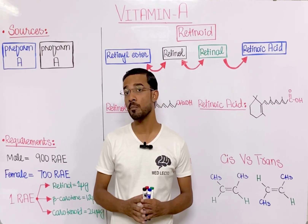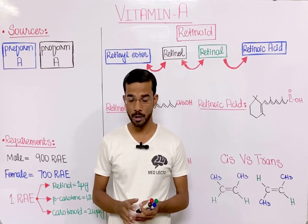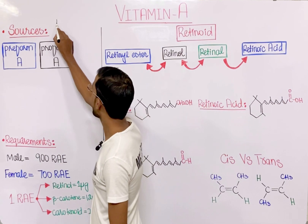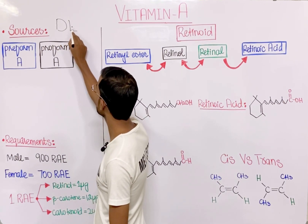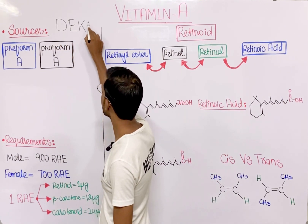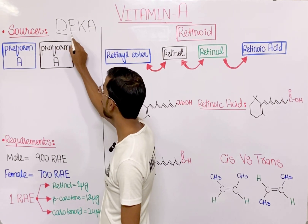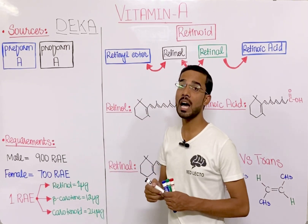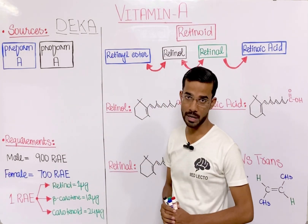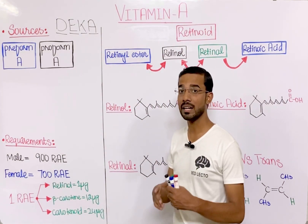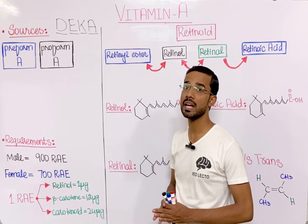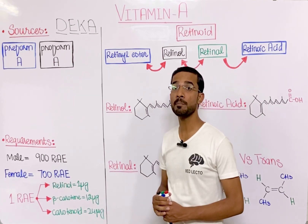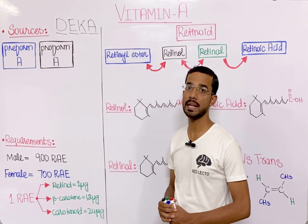There are four most important fat-soluble vitamins, remembered by the acronym DEKA: Vitamin D, Vitamin E, Vitamin K, and Vitamin A. These four fat-soluble vitamins can cause toxicity when they start accumulating in our body. In this lecture we will see the important features of Vitamin A.